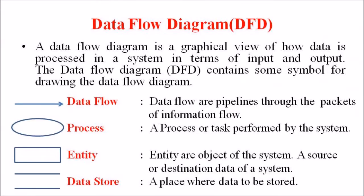Before going to the data flow diagram, as mentioned in the previous lectures, a data flow diagram is a graphical view of how data is processed in a system in terms of input and output. The DFD contains some symbols for drawing data flows in a system. The four basic symbols available are data flow, process, entity, and data stores.